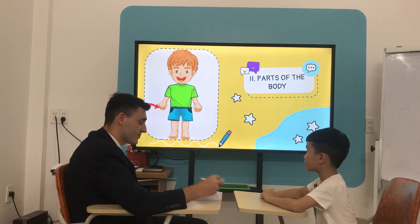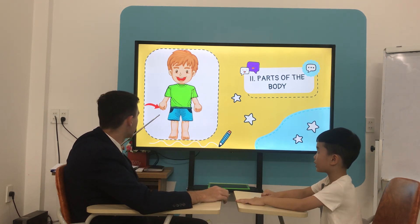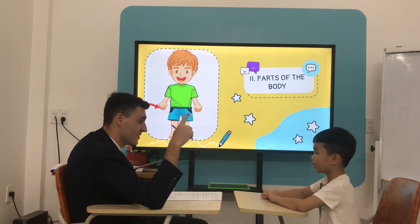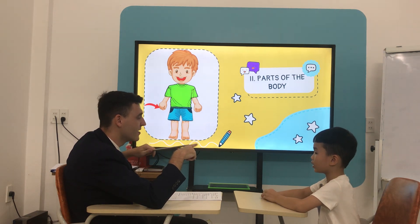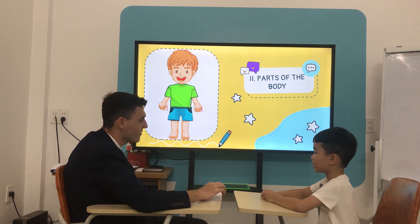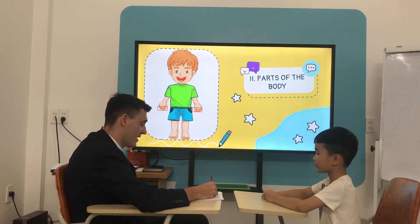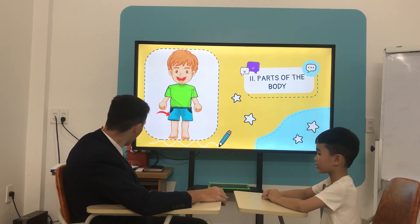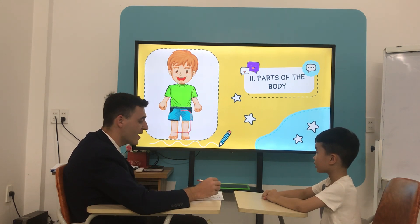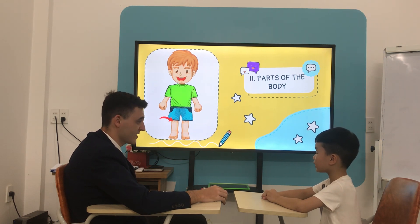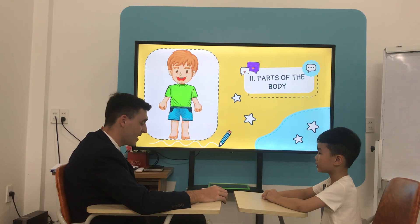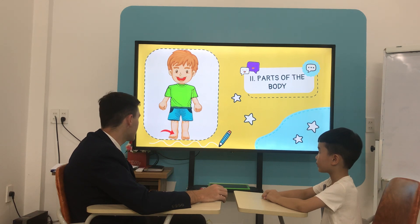What is it? It's a finger. It's a finger. How many fingers do you have? I have 10 fingers. And what is it? How many legs do you have? I have 2 knees. What is it? Knee. How many knees do you have? I have 2 knees.